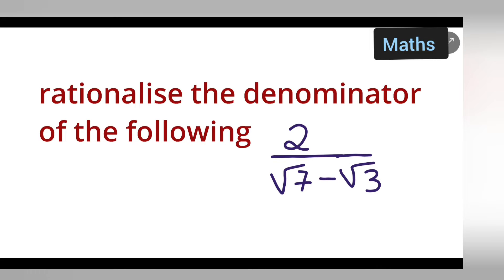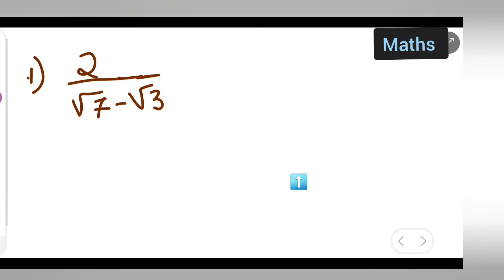Welcome to today's class of mathematics. Today's question is: rationalize the denominator of the following number, that is 2 upon root 7 minus root 3. Let us see how to rationalize the following denominator. Write down the question: rationalize the following denominator — 2 upon root 7 minus root 3.